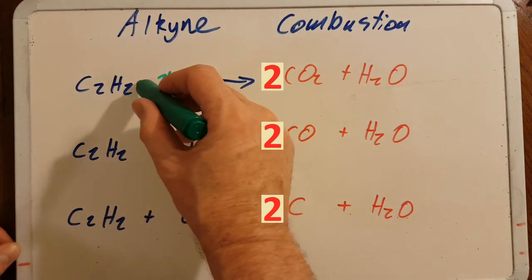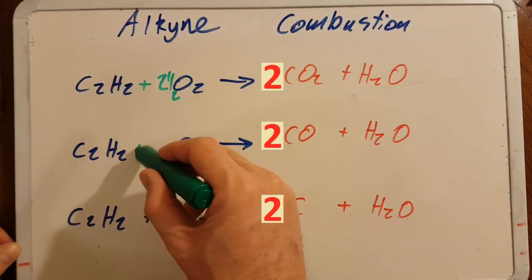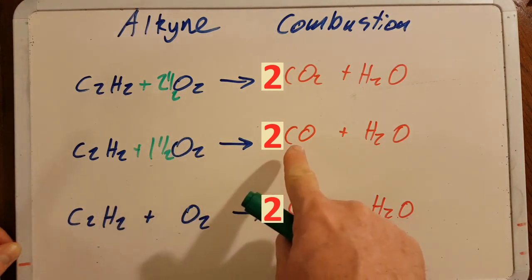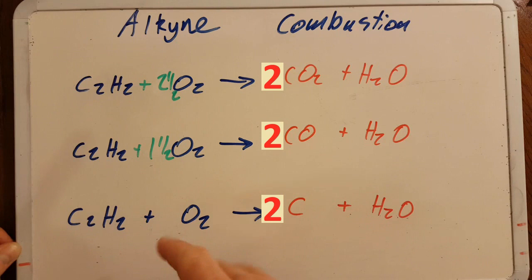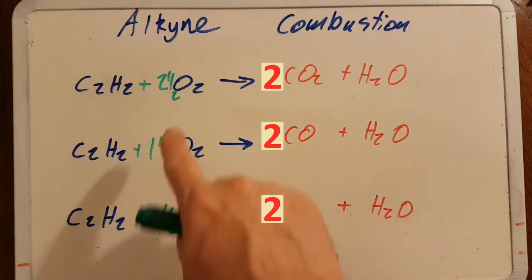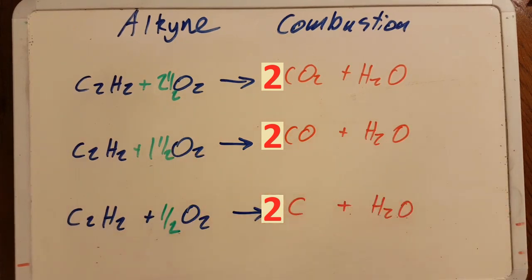Balancing these out, two and a half oxygen there. Less oxygen, if there's only one and a half oxygen you're going to get the monoxide. And if there's only half an oxygen you're going to get the soot. So more oxygen gives more complete combustion.